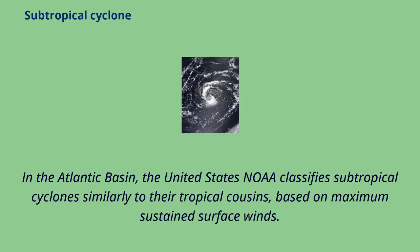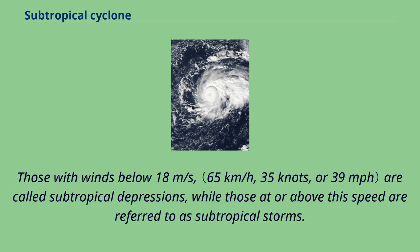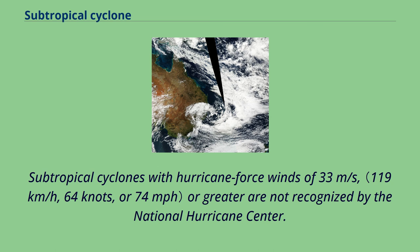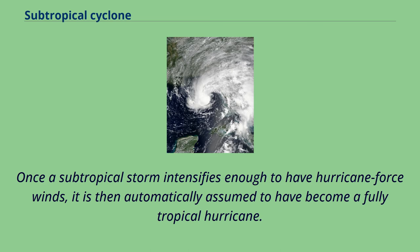In the Atlantic Basin, the United States NOAA classifies subtropical cyclones similarly to their tropical cousins, based on maximum sustained surface winds. Those with winds below 18 meters per second are called subtropical depressions, while those above this speed are referred to as subtropical storms. Subtropical cyclones with hurricane force winds of 33 meters per second or greater are not recognized by the National Hurricane Center. Once a subtropical storm intensifies enough to have hurricane force winds, it is automatically assumed to have become a fully tropical hurricane.